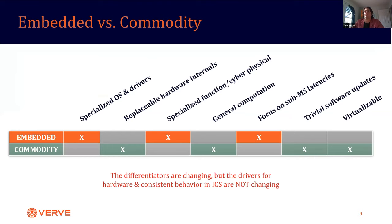Differentiating embedded versus commodity systems: embedded systems require specialized OS and drivers, have a specialized function that is generally cyber-physical, and focus on sub-millisecond latencies. As we move toward things like iPads where everything is soldered on, or MacBooks where you can't update RAM or SSDs, the lines between what is embedded and what is commodity are getting very close. Generally I try to differentiate it as: embedded systems perform a functional task that has an implication on the real world.